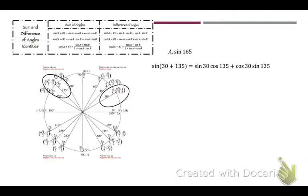We can rewrite that as sine of A plus B — that's the top right equation under sum of angles — which equals sine of A times cosine of B plus cosine of A times sine of B. So in our case it's sine of 30 times cosine of 135 plus cosine of 30 times sine of 135.